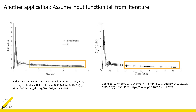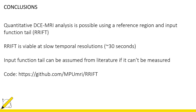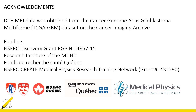In conclusion, we proposed a method for analyzing DCE MRI using a reference region and input function tail. Since this method does not require the initial part of the input function, it is viable at slow temporal resolutions down to 30 seconds. If an input function tail cannot be measured, then we can assume an input function tail from literature. The code for this study is available on GitHub. We would like to thank the Cancer Imaging Archive for providing the DCE MRI data, along with the following sources of funding. Thank you for watching.